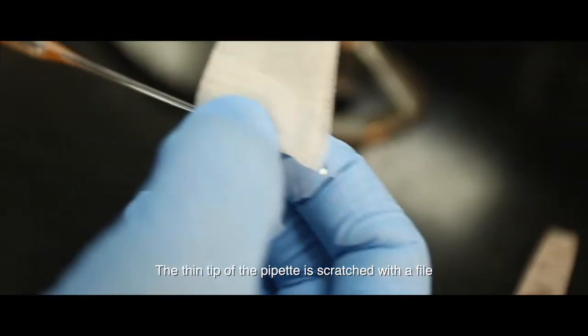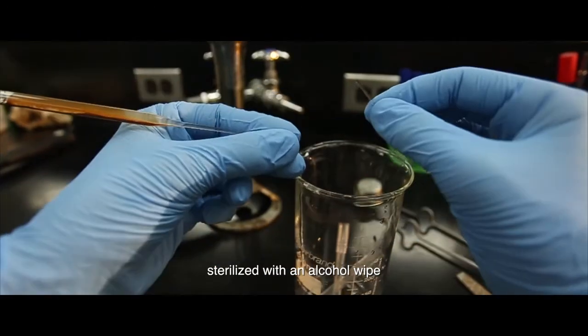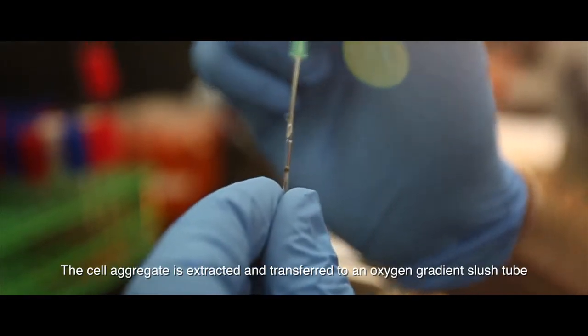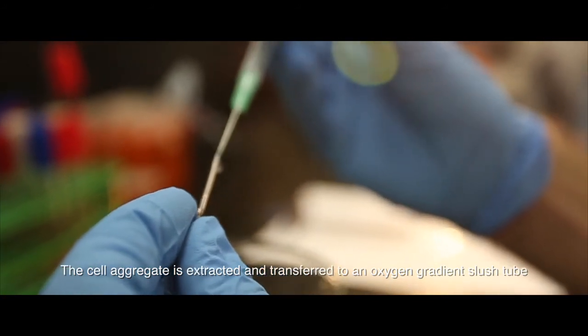The thin tip of the pipette is scratched with a file, sterilized with an alcohol wipe, then broken. The cell aggregate is extracted and transferred to an oxygen gradient slush tube.